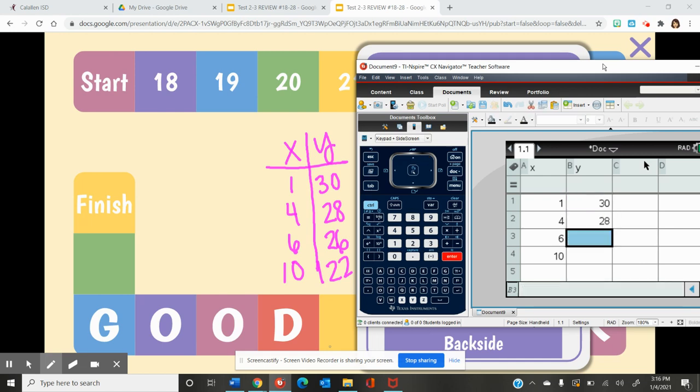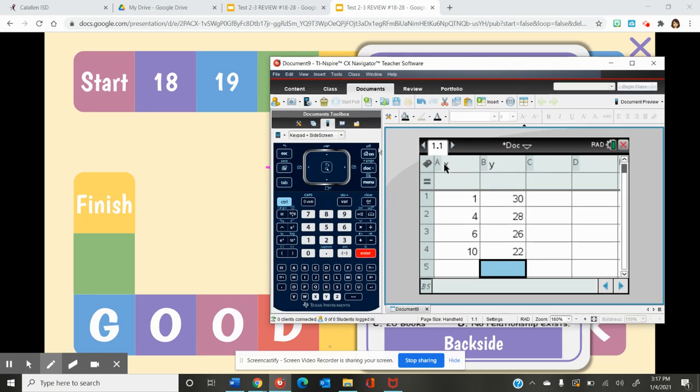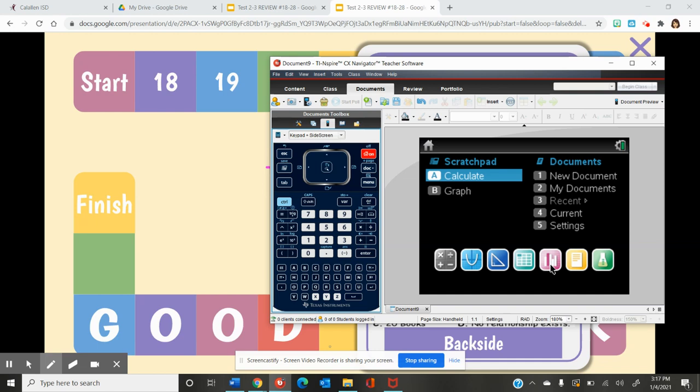Now I'm going to enter in my Y values: 30, 28, 26, and 22. Now that I've entered those in, I'm going to press the on button and go to data and statistics.